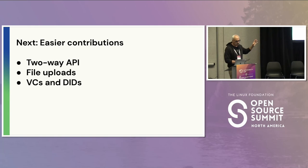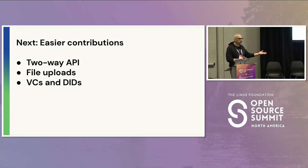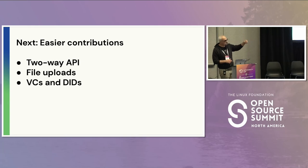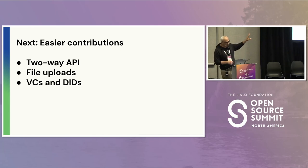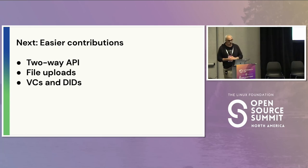Another thing important to us is easier contributions. Right now we use a GitHub flow for getting data in. We want to make this process more like a Wikipedia for climate data — having our API easier for folks to both submit as well as read, doing file uploads in our system. Finally, we are doing some piloting of verified credentials and DIDs for bringing in trusted data from the internet. It's still an ongoing process, but we're hoping to work with others to make standards around this.